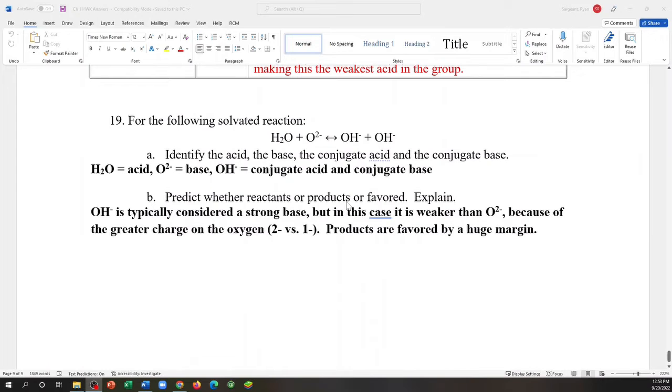Predict whether reactants or products are favored at equilibrium and explain. This is a recap of question 15 where we said that if the same atom contains a more negative charge, it will be a stronger base. That means that this is the stronger base and whichever one of these I decided to call my conjugate base is the weaker base.